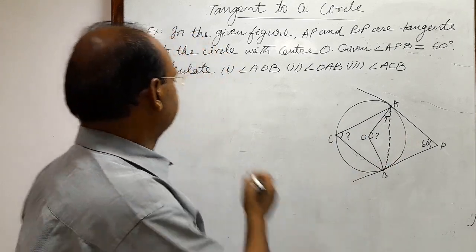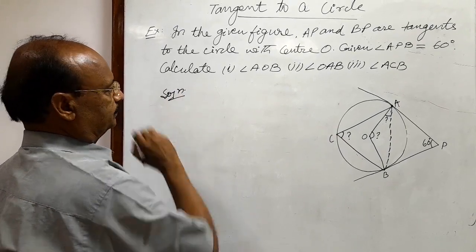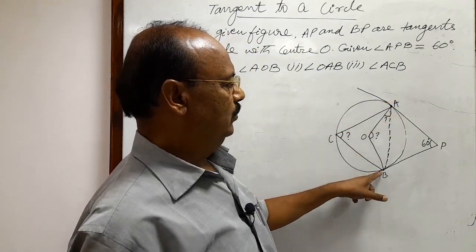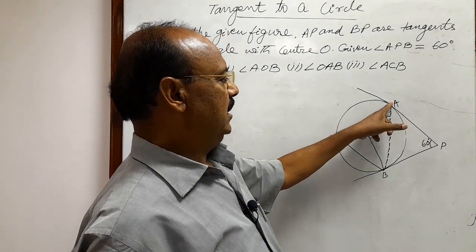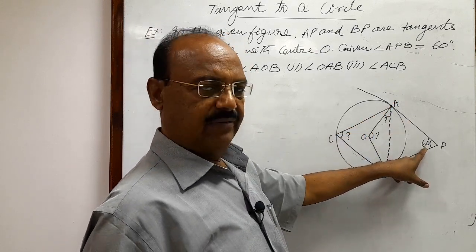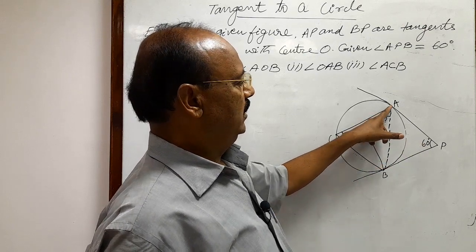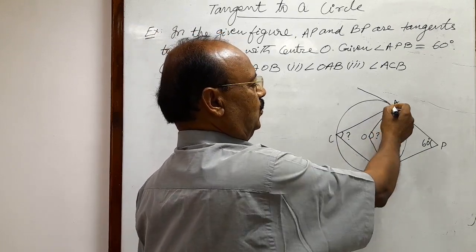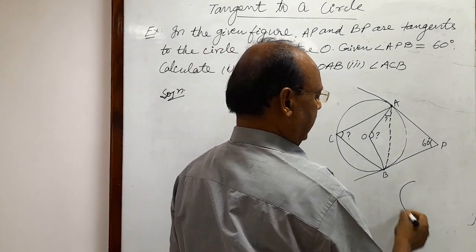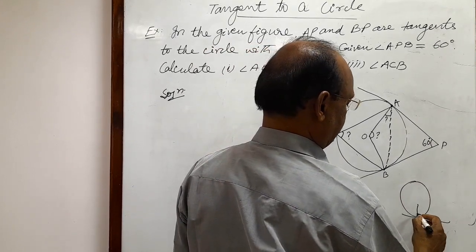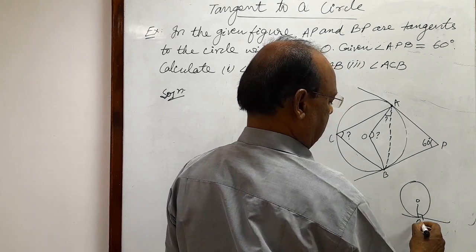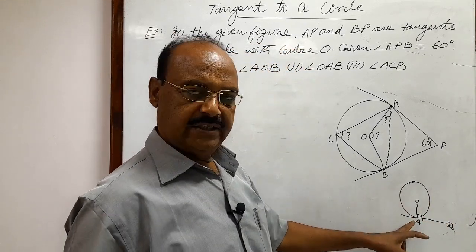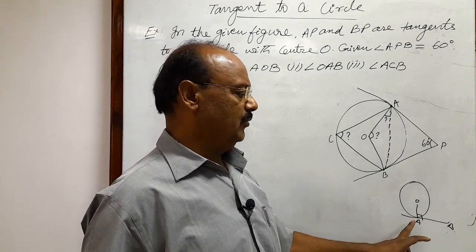Let us see the solution. First of all, let us consider quadrilateral AOBP. In this quadrilateral, angle P is given as 60 degrees. OA is perpendicular to the tangent AP at the point of contact, because the radius is always perpendicular to the tangent at the point of contact.